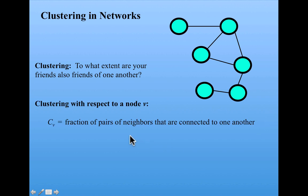So let's define clustering with respect to a particular node V. It's the fraction of pairs of neighbors that are connected to one another. For example, look at this node here. It has two neighbors, and its neighbors are connected to each other.